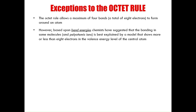Based on our understanding of quantum theory and electron configuration, we now know that the octet rule does not provide a full explanation for the stability of certain atoms within compounds. The octet rule allows for a maximum of four bonds and eight electrons around a central atom, but based on bond energies, chemists have suggested that certain molecules and polyatomic ions are best explained with a model showing more or less than eight electrons in the valence energy level of the central atom.